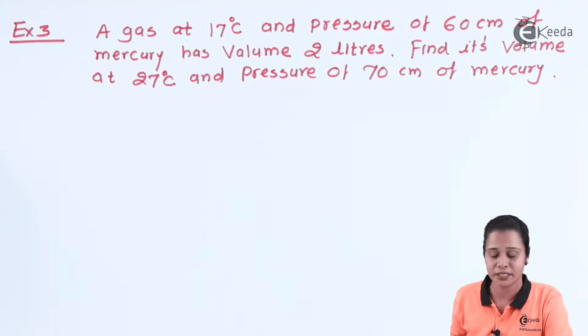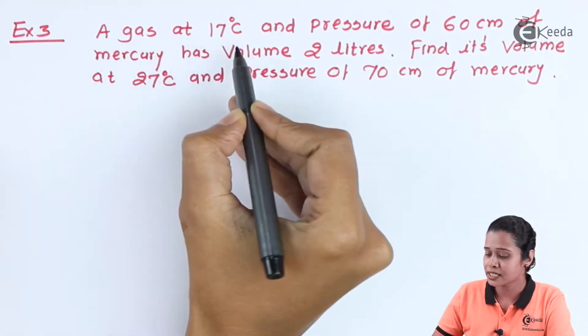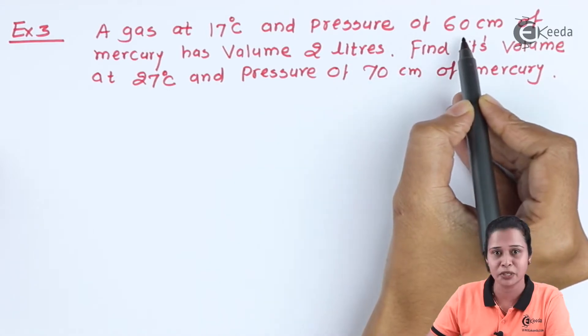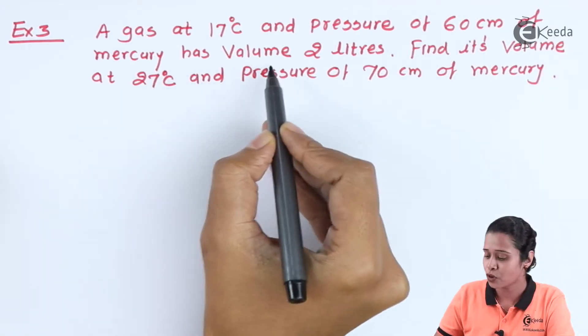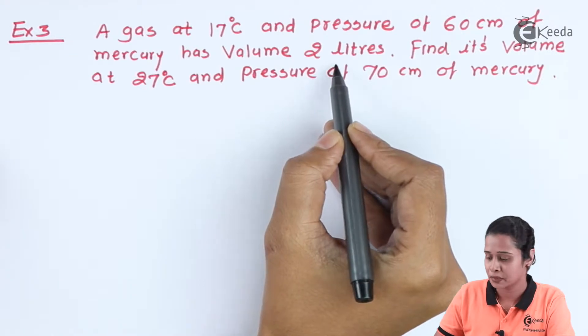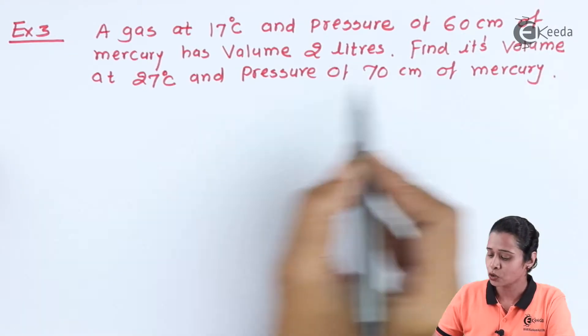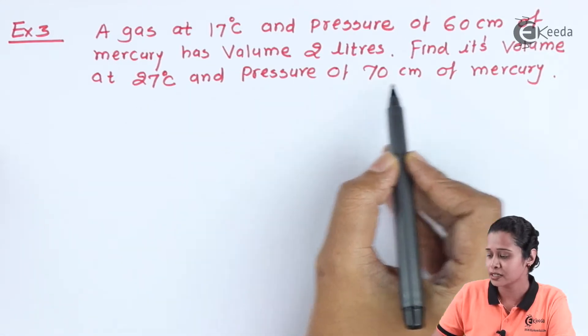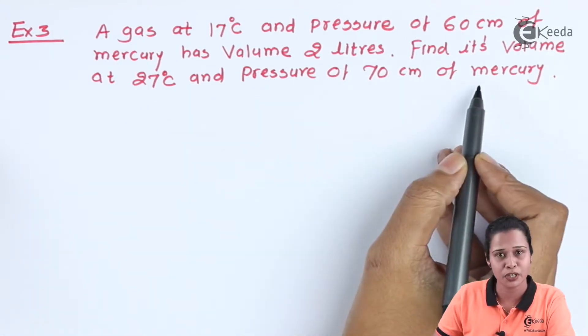Numerical number 3 says: A gas at 17 degrees Celsius and pressure of 60 cm of mercury has volume 2 liters. Find the volume at 27 degrees Celsius and pressure of 70 cm of mercury.